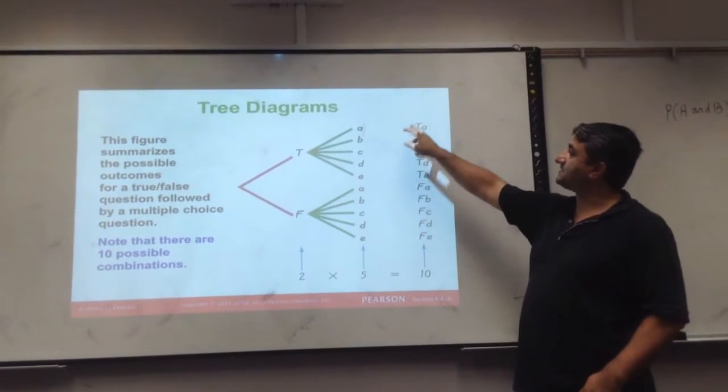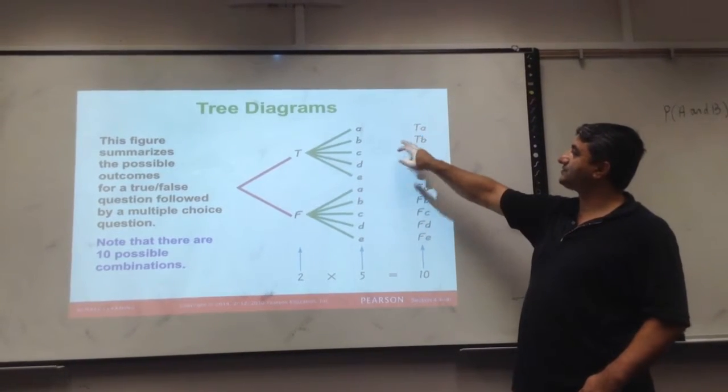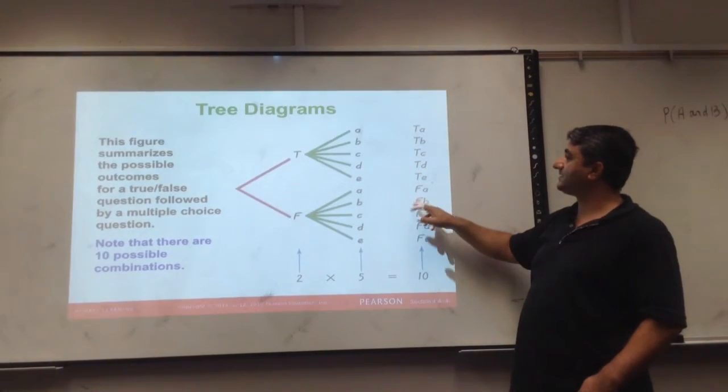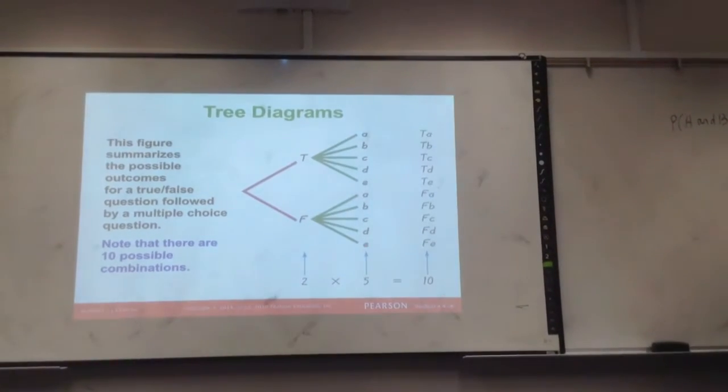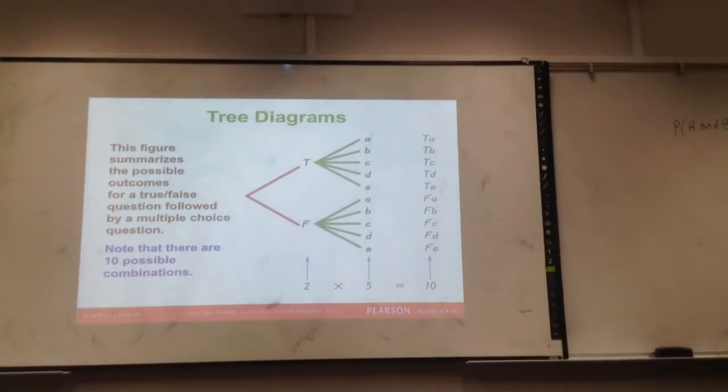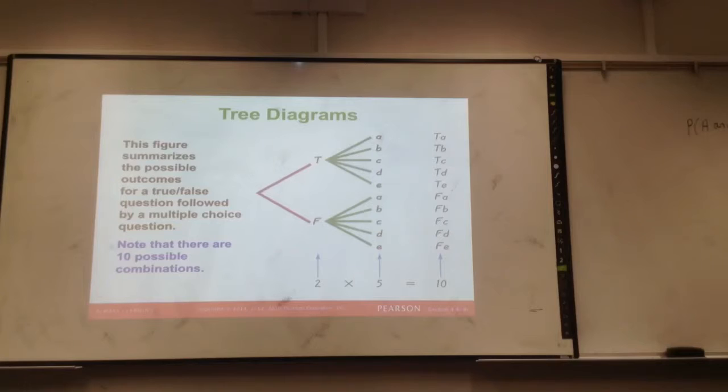So you can answer as a true-A, true-B, true-C, true-D, true-E, then F-A, F-B, and so on. So it's very easy to make a table if you have smaller sample space.